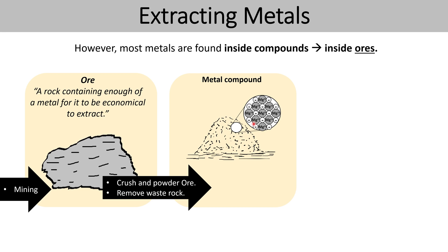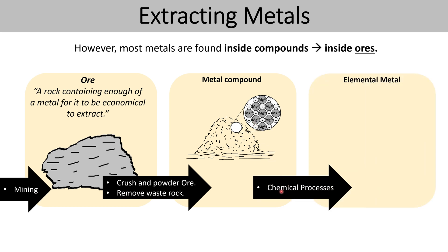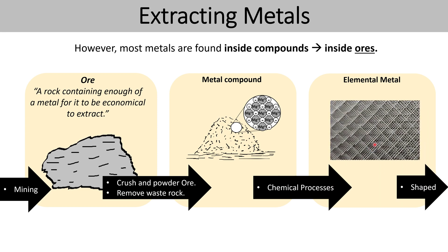It's not the pure metal — it's the metal in a compound, bonded with something else. So therefore we're going to need to carry out a chemical process to obtain the elemental metal, and then go on to shape it into the everyday metal objects that you see.